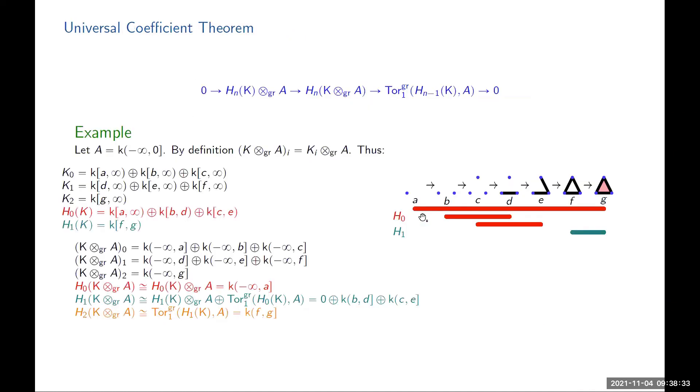Some other things you can do is you can also look at the universal coefficient theorems. These are just Künneth theorems, except the second thing that you have is not a chain complex, but it's just a simple module that you think of as a chain complex concentrated in degree zero.